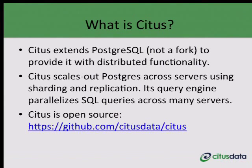This is a distributed database that uses the PostgreSQL extension APIs. Citus horizontally scales PostgreSQL across multiple machines, using sharding and replication behind the covers. Citus' query engine parallelizes SQL queries across the machines in the cluster. Most importantly, Citus 6.1 is open source.